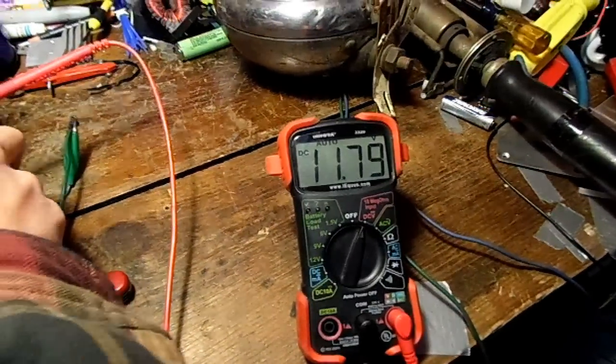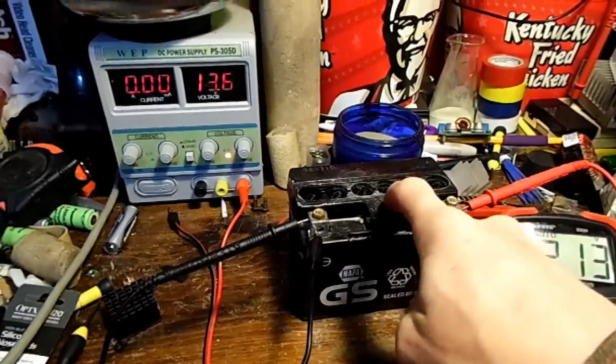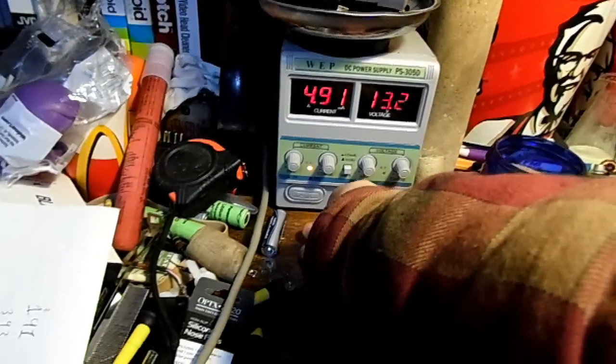I'll say 11.79, that's pretty good. Now that we've established this battery has 950 milliamp hours of capacity where it should have four, let's charge it up while we make the electrolyte.